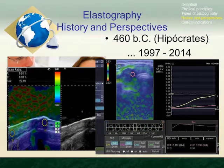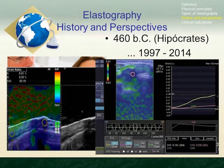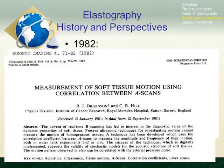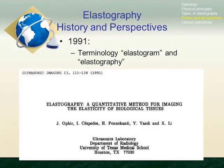Since the beginning of medicine, palpation was the first technique to assess tissue stiffness. Pathological changes are generally correlated with changes in tissue stiffness as well. Elastography is a relatively new technique; first studies were published in 1997. Strain sonography with color-coded maps was used to assess focal lesions — blue areas represent greatest stiffness, red areas the lowest, and green areas intermediate stiffness. First studies to measure soft tissue motion were published in 1981 using A-scans.